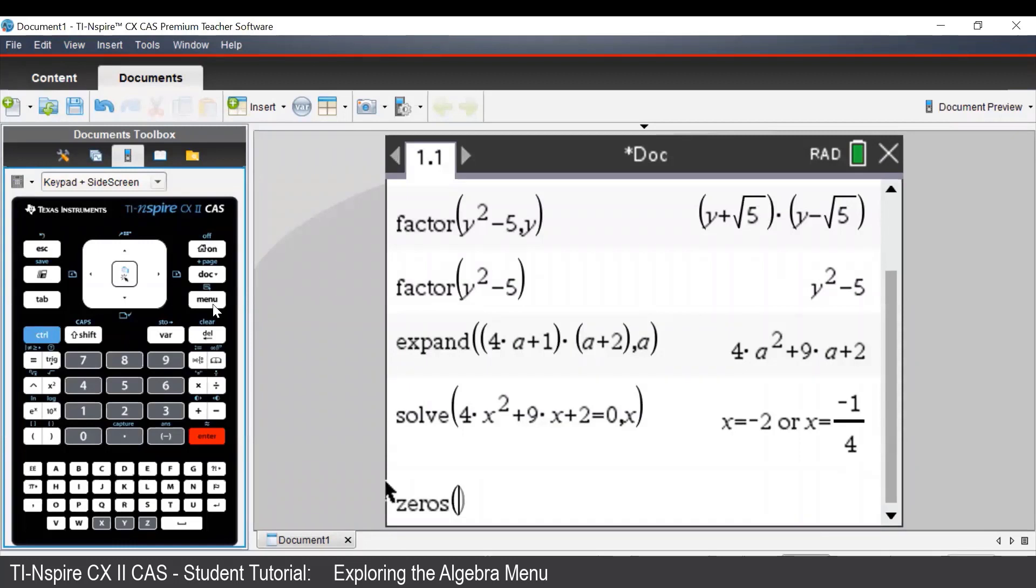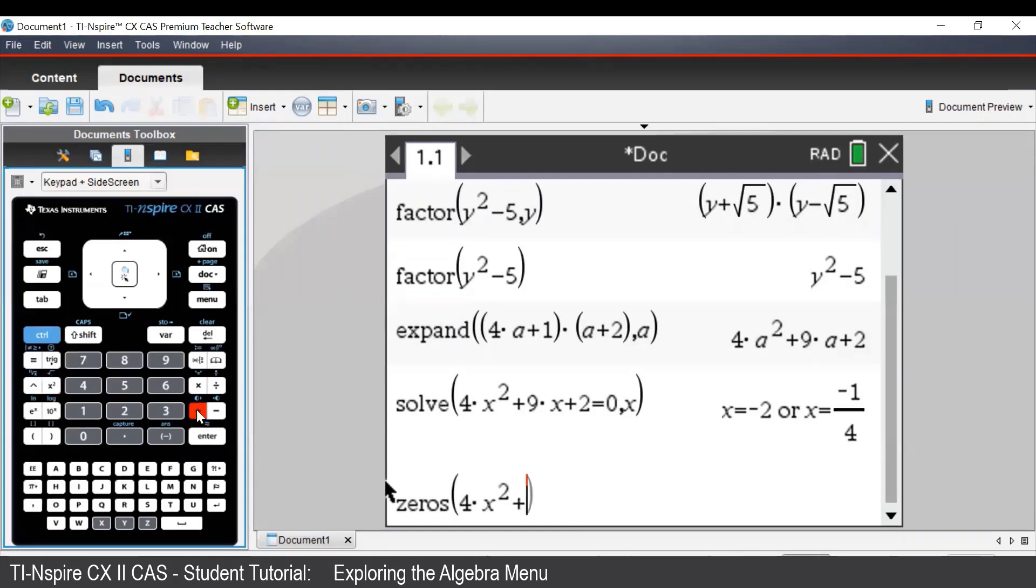To use the zeros command, we need to type in our expression. So we could type in 4x squared plus 9x plus 2. Once we've typed in our expression, we press comma, x, and then enter.